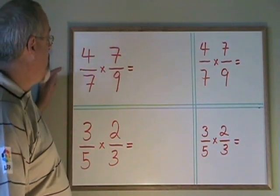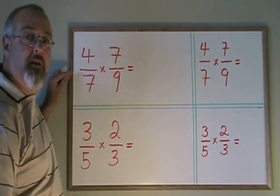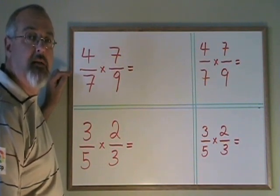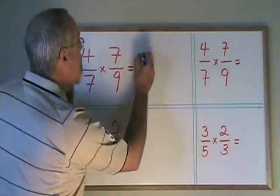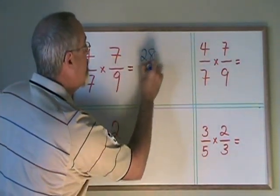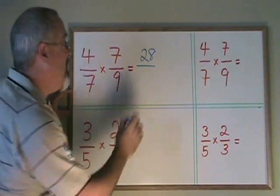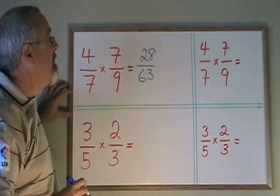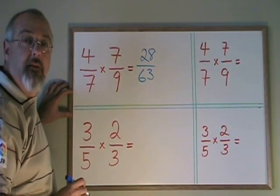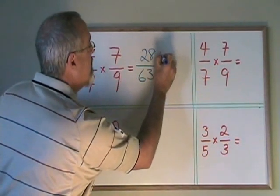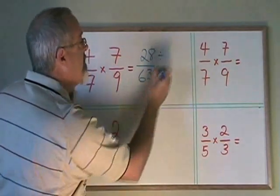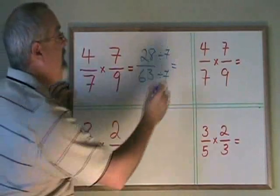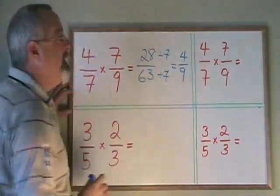Let's look at this question: 4/7 times 7/9, and try doing it the usual way without canceling. 4 times 7 is 28, and 7 times 9 is 63. This fraction can be reduced. The top and the bottom have a common factor of 7, so if I divide both top and bottom by 7, I get 4/9 as my answer.